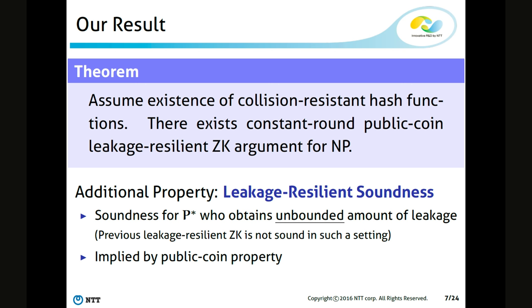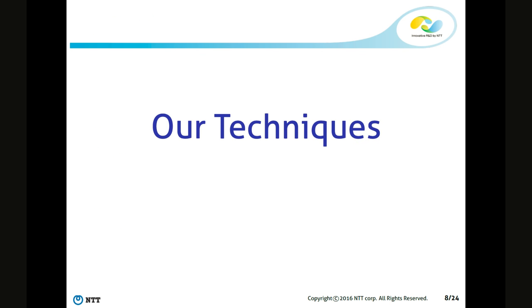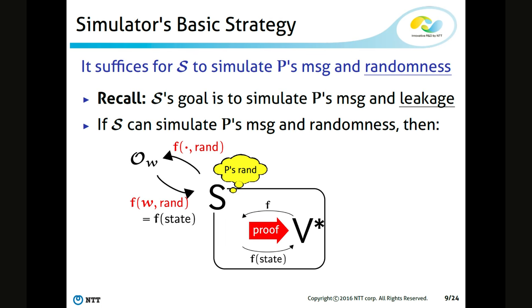This work uses a weaker assumption and provides a protocol that satisfies stronger security in the leakage setting. Now let me explain the techniques of this work. First, let me explain the basic simulation strategy in the setting of leakage resilient zero knowledge. In particular, in order to prove leakage resilient zero knowledge, it suffices to consider a simulator who simulates the prover's message and the prover's randomness simultaneously.